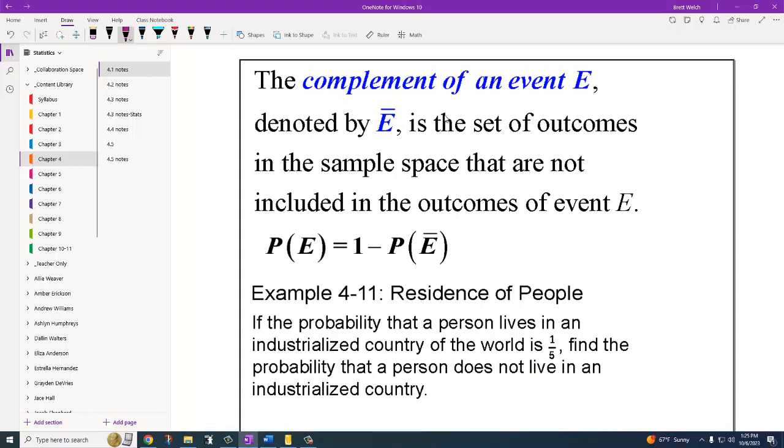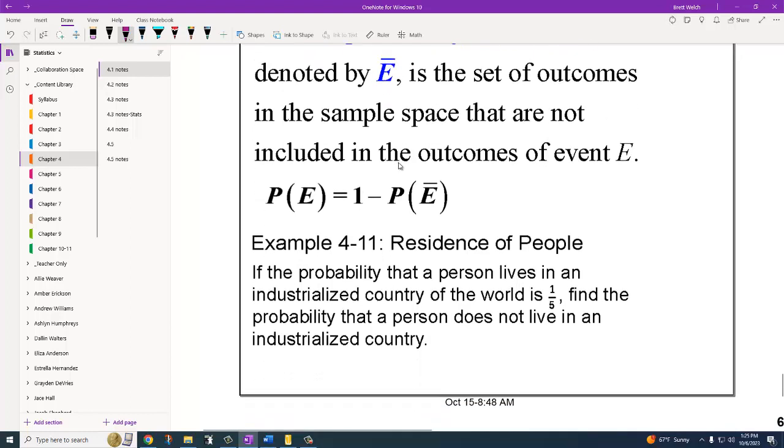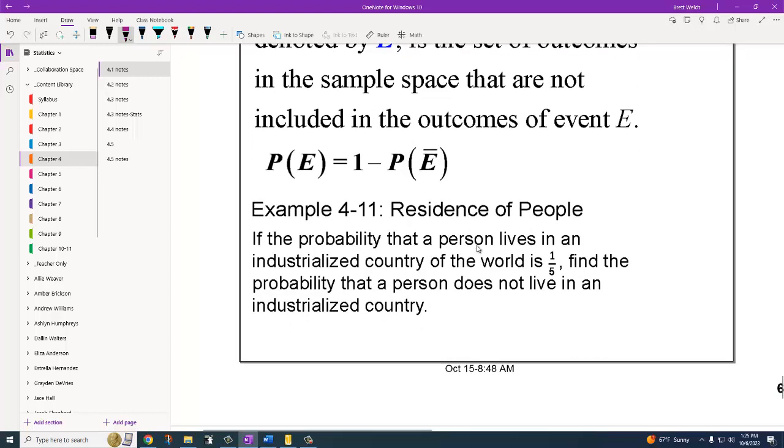The complement of an event will sometimes be written as E with a bar over the top of it. If it's used, it's just a way to describe that, if the probability of getting a 3 when you roll a die is 1 out of 6, the probability of not getting a 3 is the complement. So, for instance, if people live in an industrialized country is one-fifth of the world, the probability that a person does not live in an industrialized country would be 1 minus one-fifth. This is just a way of saying, we have to have 100% probability, and if 1-fifth is that you live industrialized, then we know 4-fifths would be the probability that you don't live in an industrialized part of the world.